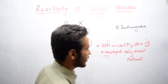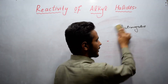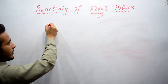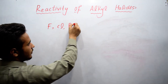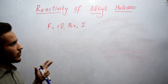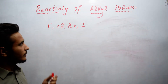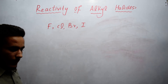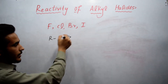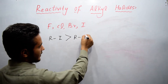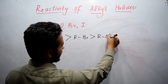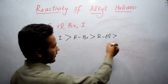Due to this polarity, alkyl halides are more reactive. Now looking at the order of reactivity: the halogens are fluorine, chlorine, bromine, and iodine. The order of reactivity of alkyl halides is: alkyl iodide is more reactive than alkyl bromide, which is more reactive than alkyl chloride, and alkyl chloride is more reactive than alkyl fluoride. So: RI > RBr > RCl > RF.